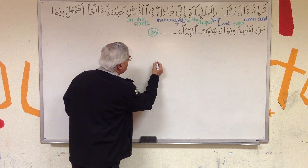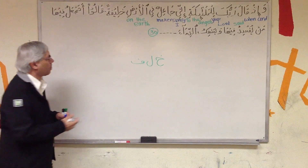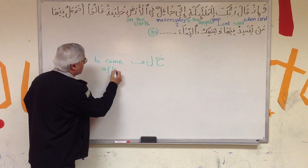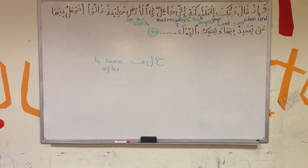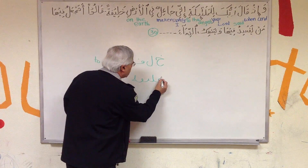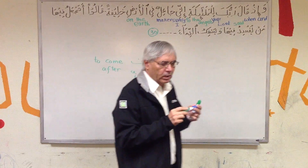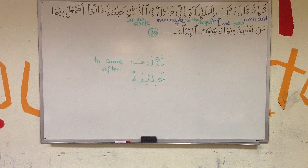The next word starts with three letters: KHA, LAM, and FA. This means 'to come after.' KHA, LA, and FA means to follow or to come after. The word KHA, LAM, FA means someone who comes after. So if there is a ruler, if there is a king, and after him the next person takes over, he is called Khalifa.